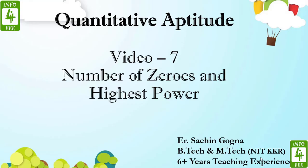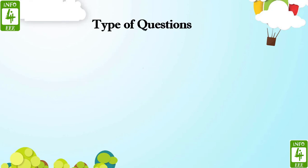Welcome everyone, you are watching the Quantitative Aptitude series with Sachin Gokner. This is the seventh video. In this video we are going to see about number of zeros and highest power. The questions on this topic are of two types: number one is with power.